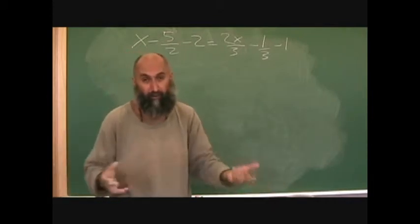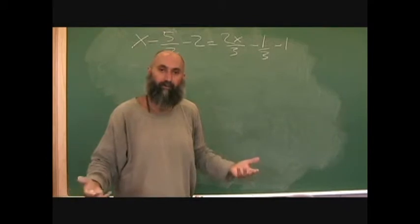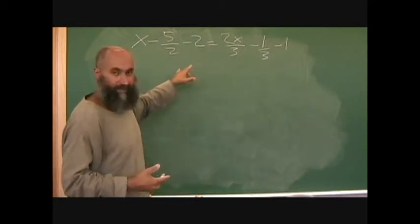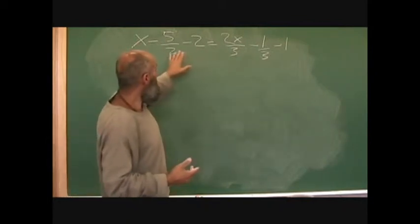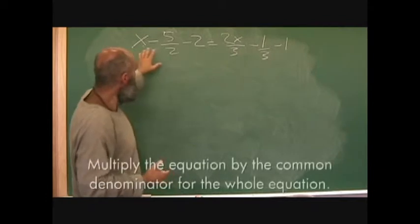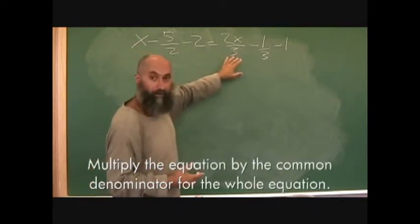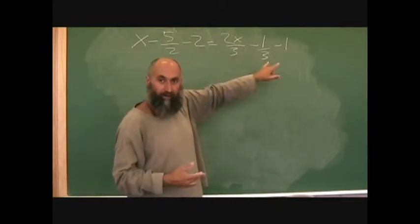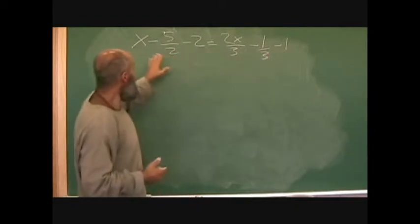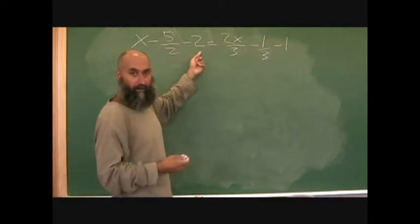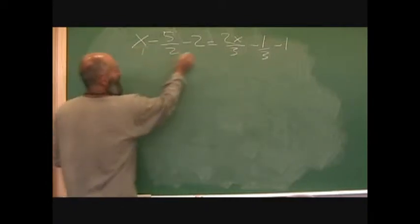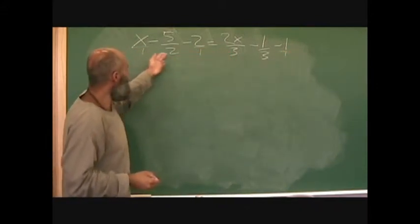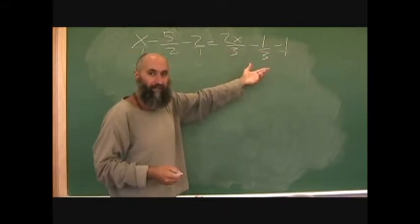I'm going to use cross multiplication - cross multiply, get rid of our fractions, and solve for it. The other way to solve this is to multiply every single term in the equation by a common denominator, which eliminates all the denominators and fractions. For example, all terms that are not fractions are over one. So what's the common denominator between one, two, one, three, three, and one? That's just going to be six.